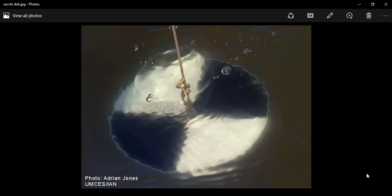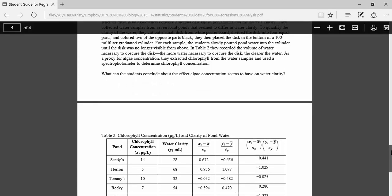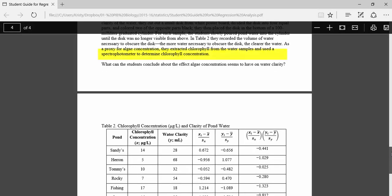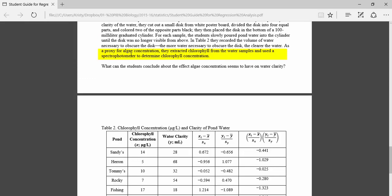That's a way that they can measure how clear the water is because the farther down it can go and you can still see it, the better the water clarity. So the students in this case were borrowing from this procedure, but instead of lowering a disc down into the bottom of the pond, they were creating a similar kind of disc and putting it at the bottom of a hundred milliliter graduated cylinder and then measuring how much water they had to add to the top of it until they could no longer see it. So pretty similar, but just on a smaller scale. In table two, they recorded the volume of water necessary to obscure the disc. As a proxy for algae concentration, they extracted chlorophyll from the water samples and used a spectrophotometer to determine chlorophyll concentration.